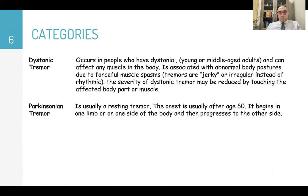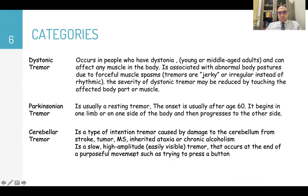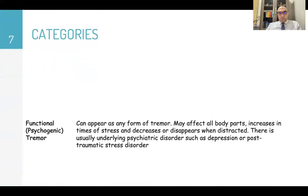Parkinsonian tremors are usually resting tremors with onset typically after age 60, beginning on one limb or one side of the body and progressing to the other side. Cerebellar tremors are intention tremors caused by damage to the cerebellum from conditions like stroke, tumor, multiple sclerosis, inherited ataxia, or chronic alcoholism. They are slow, low-amplitude tremors, usually occurring at the end of movement such as trying to press a button.